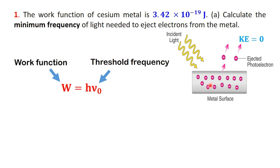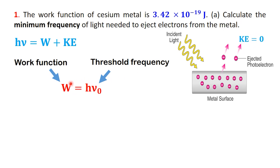The threshold frequency is the lowest frequency of light that has just enough energy to free an electron. At this point, the electron is released but with no extra kinetic energy. That brings us to the photoelectric equation. In general, it's h nu equals w plus kinetic energy. But since the electron leaves with no kinetic energy at the threshold, the equation simplifies to w equals h nu 0. Next, let's solve for the threshold frequency.